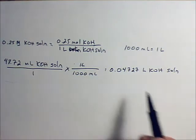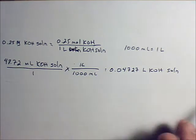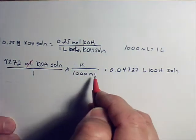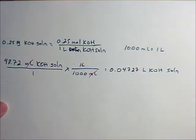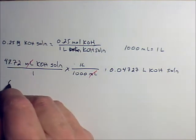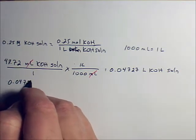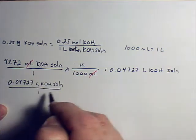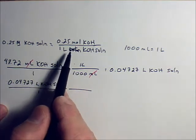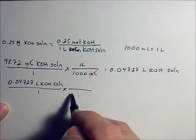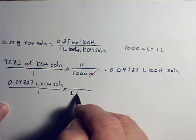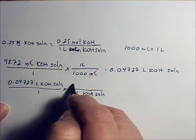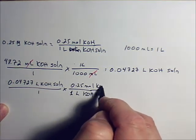I don't have to round it off because that's the correct number of significant digits. I do have to cancel units. Now that I've got the liters of solution, 0.04727 KOH solution, I can use the concentration to get to moles. Where I put 1 liter of KOH solution on the bottom and 0.25 moles of KOH on the top.